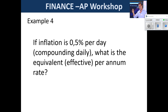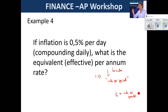Example four: if inflation is 0.5% per day, what is the equivalent effective per annum rate? The key concept here is the rate per period. If you're doing something quarterly, you divide R by 4 so the rate becomes a rate per quarter. We always want to find the rate per period for any calculation — if you're doing it daily, you want a rate per day.